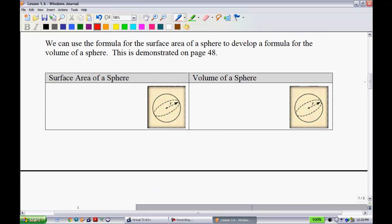All right, and we can use the formula for the surface area of a sphere to develop a formula for the volume of a sphere. This is demonstrated on page 48 if you want to take a look at that. This could be kind of an enrichment type question on your exam. So, you determined that the surface area of a sphere turned out 4 circles. So, very simply, the formula is 4πr².